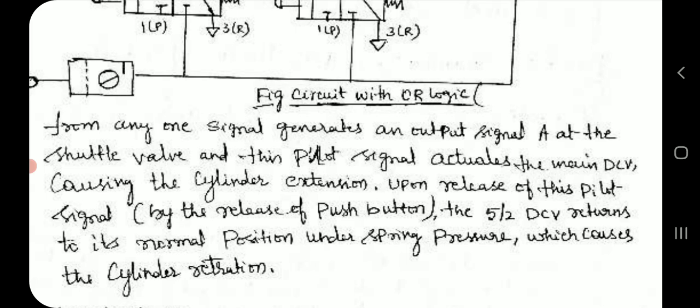From any one signal generates an output signal at the shuttle valve and this pilot signal actuates the main direction control valve causing the cylinder extension. Upon release of this pilot signal by the release of push button, the 5/2 direction control valve returns to its normal position under spring pressure which causes the cylinder retraction.